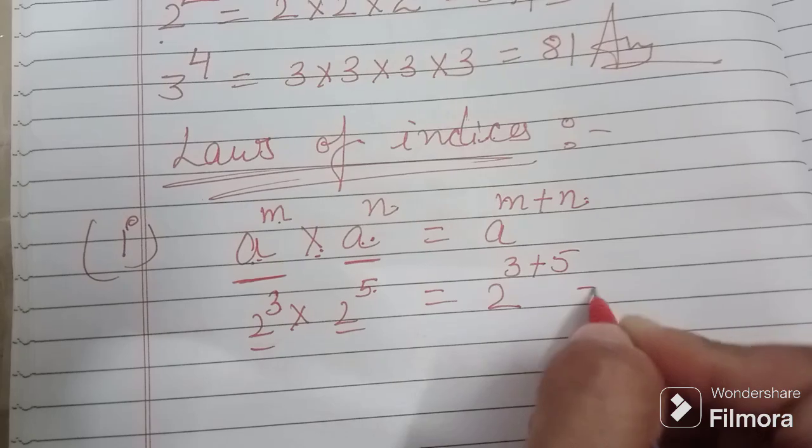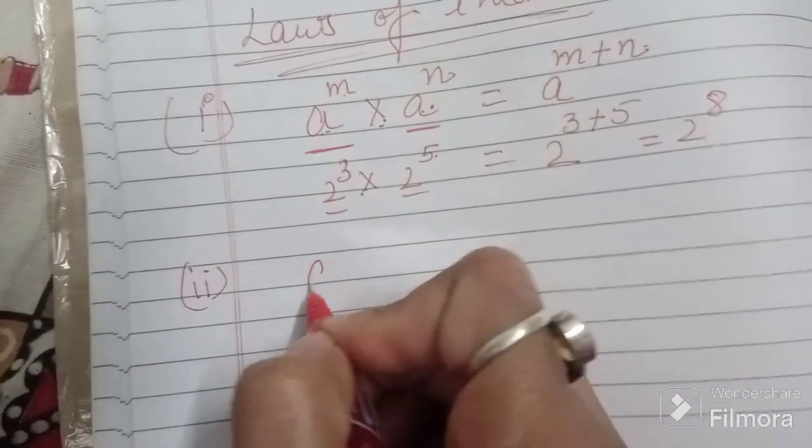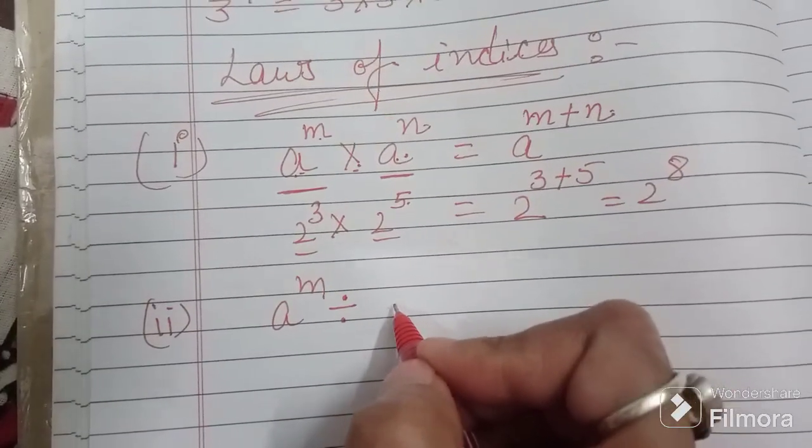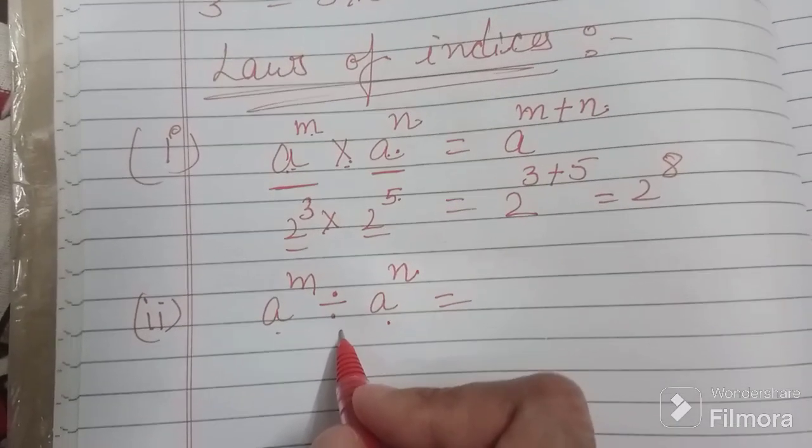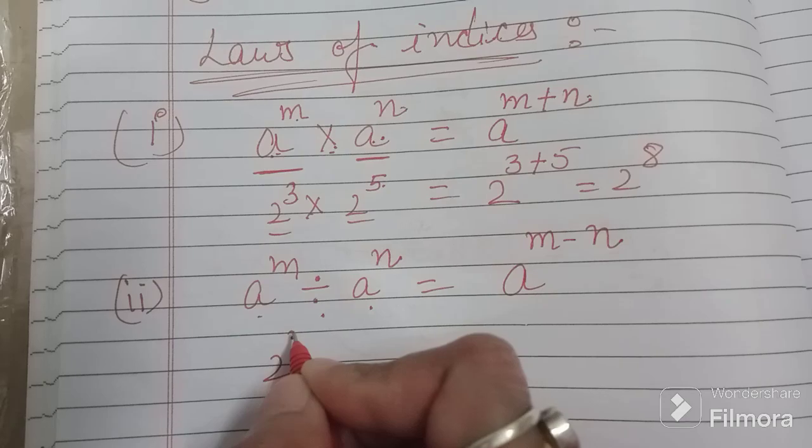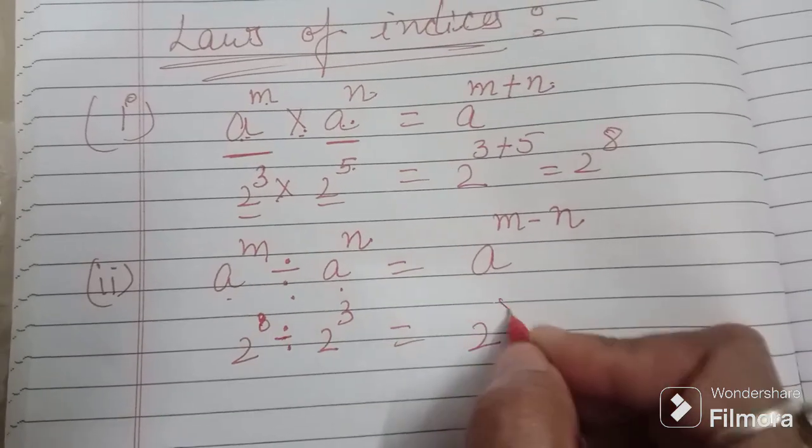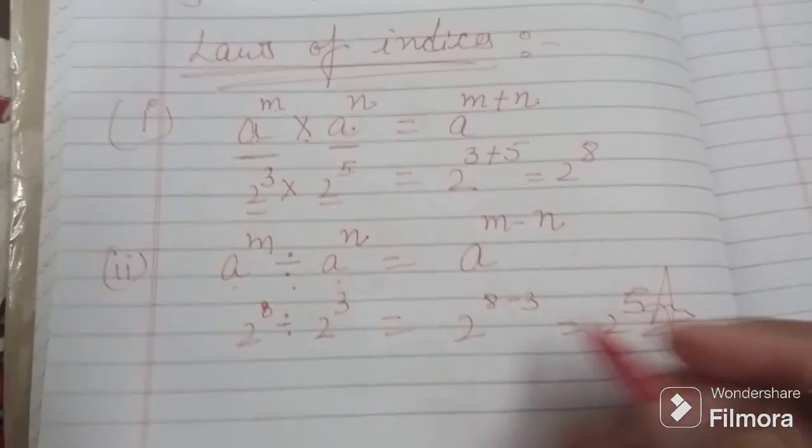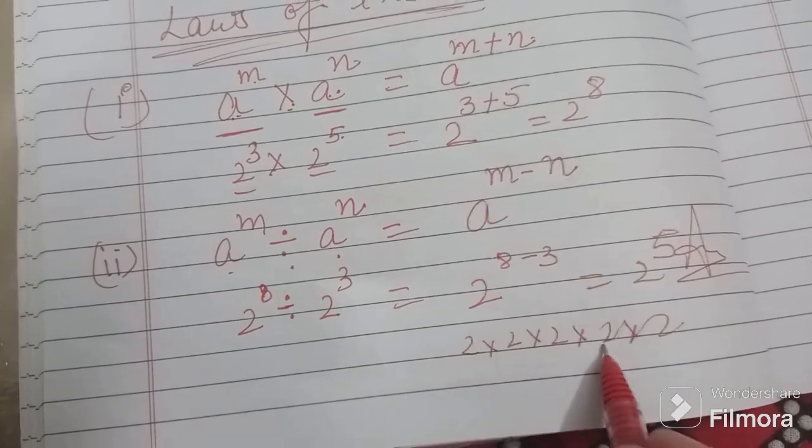The second law is again if the base is the same and numbers are in division, write the base once and subtract the powers. Suppose it is like this, write the base once, subtract the powers. If you have to evaluate, then you can multiply all of them and evaluate. Two twos are four, four twos are eight, eight twos are sixteen, sixteen twos are thirty two.